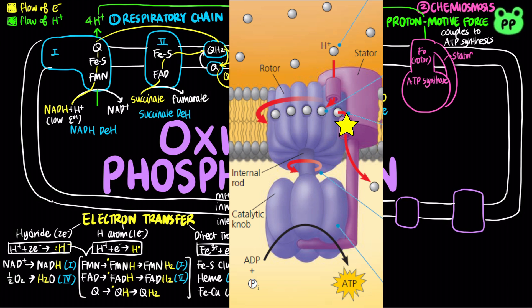Spinning of the rotor causes the internal rod to spin as well. The rod extends into a catalytic knob known as the F1 complex, which is held stationary by part of the stator. Turning of the rod activates catalytic sites in the knob that produce ATP from ADP and inorganic phosphate. This mechanism is known as rotational catalysis.